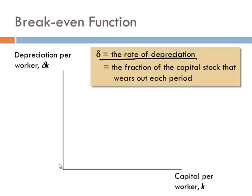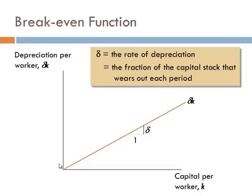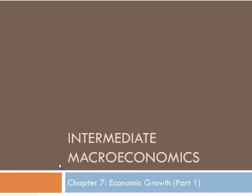Depreciation per worker is simply delta times capital per worker. If we plot that, it's just a straight line, and the slope of the depreciation or break-even function is the depreciation rate, delta. And that concludes lecture number three.